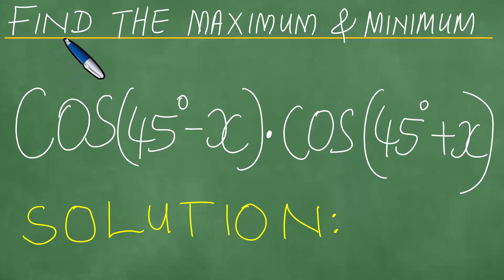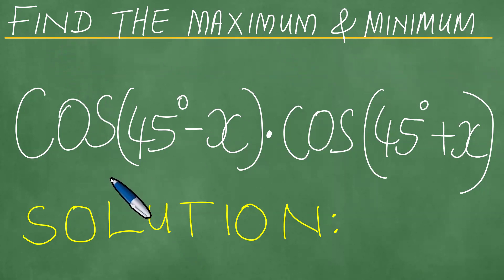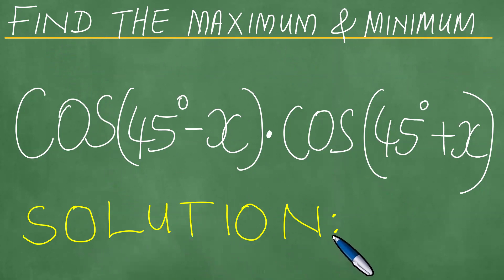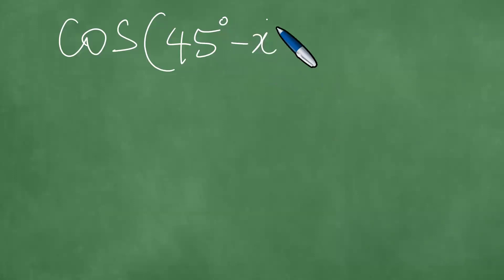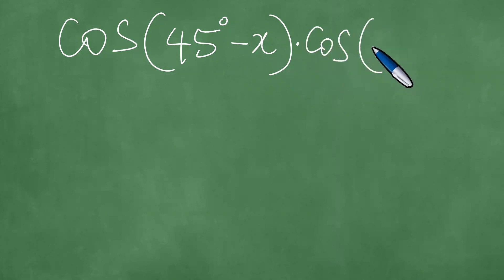We need to find the maximum and minimum values of the particular expression given here. We present a solution to this problem in a step-by-step fashion. So we start and say we have been given the cosine of 45 degrees minus x, multiplied by the cosine of 45 degrees plus x.